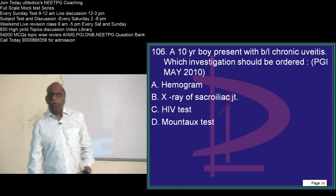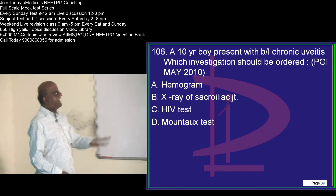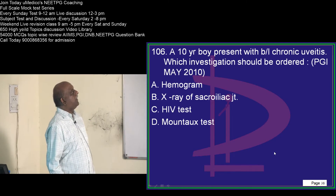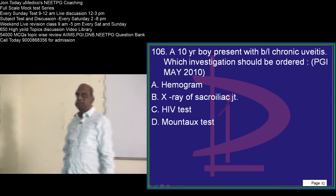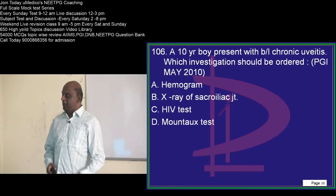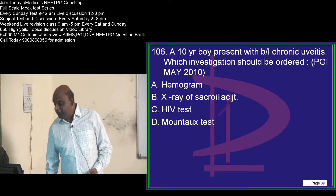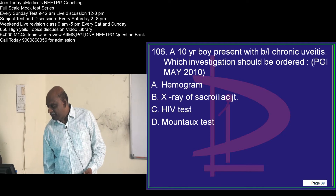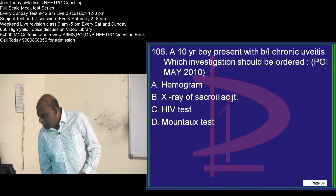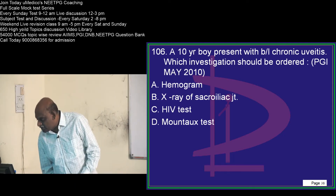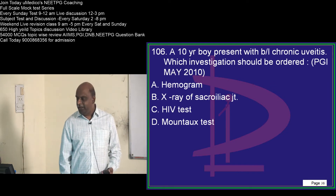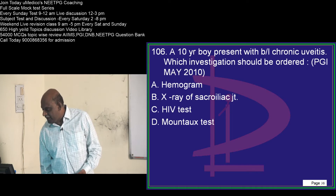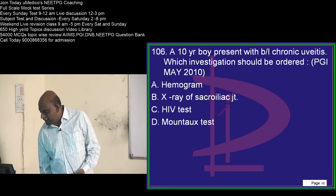A 10-year-old boy with bilateral chronic uveitis — which investigation do you want to order? This is a favorite question of the examiner. Can you make a guess? The answer suggested is x-ray of the sacroiliac joint.